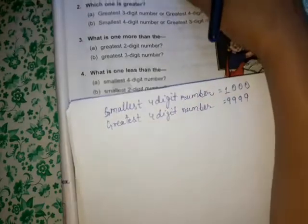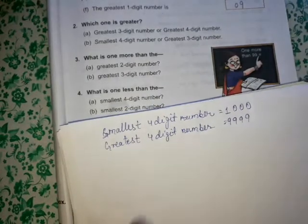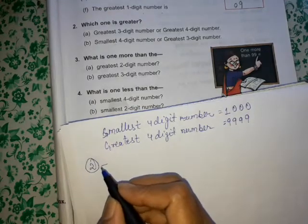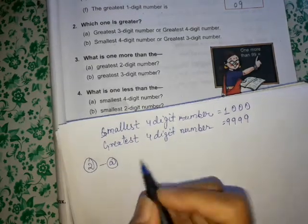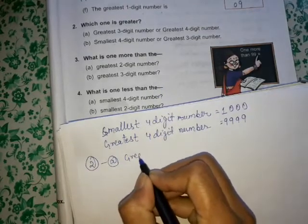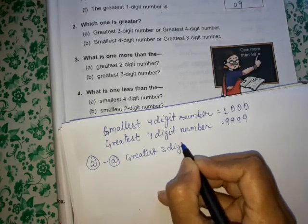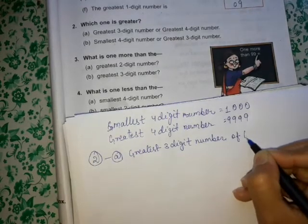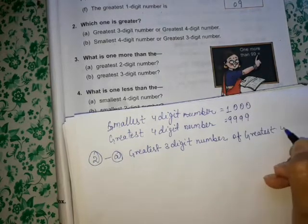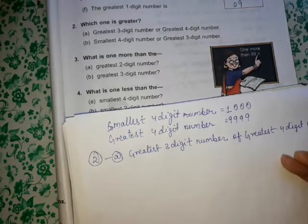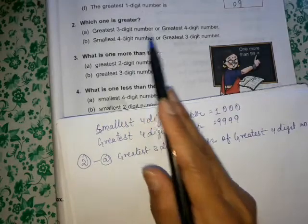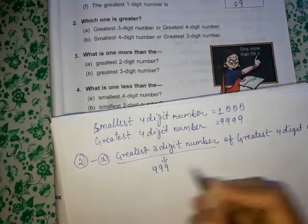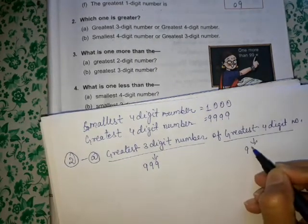Question number 2: Which one is greater? Part A asks: which is greater — the greatest 3 digit number or the greatest 4 digit number? The greatest 3 digit number is 999, and the greatest 4 digit number is 9999.